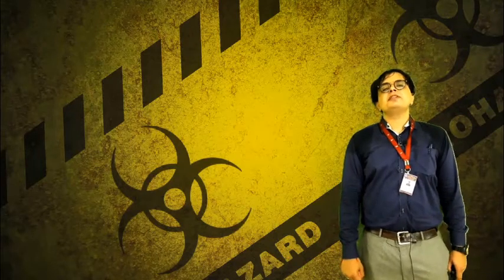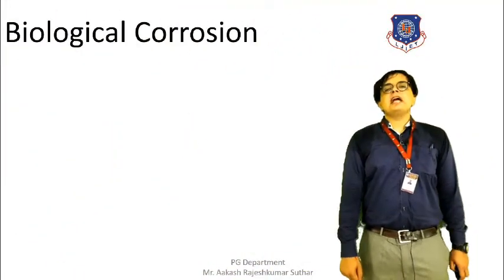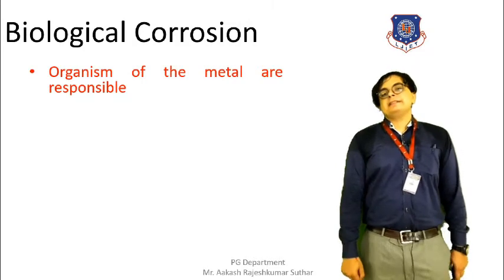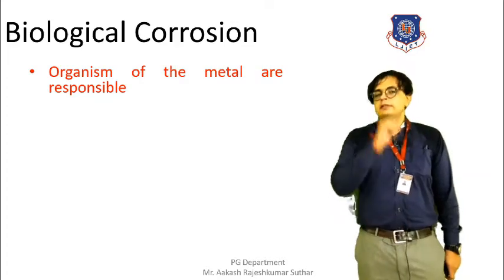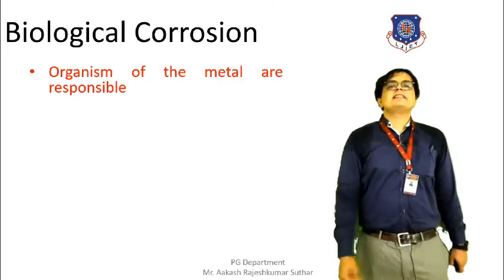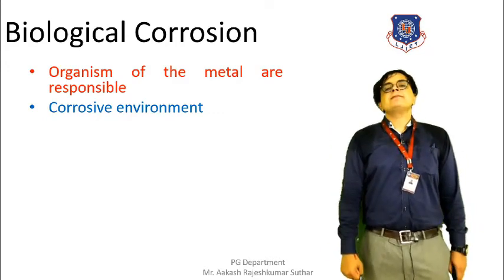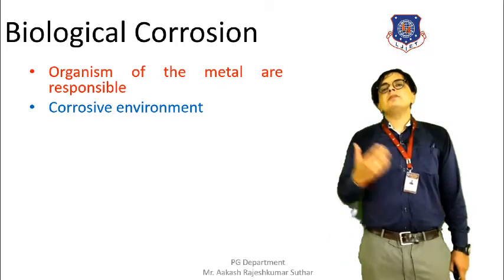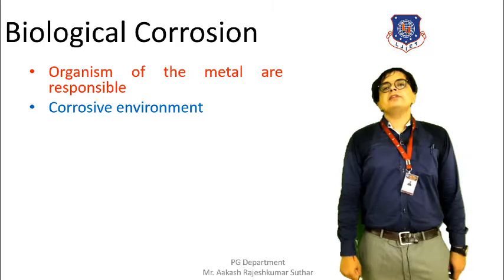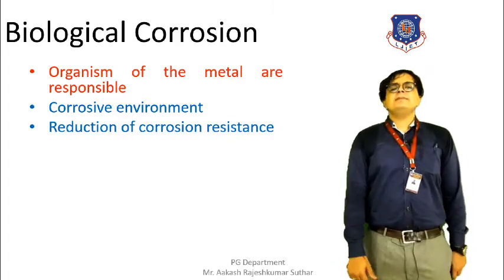When organisms are involved in the occurrence of corrosion, biological corrosion will take place. The organisms present in or around the metal cause this. They require certain conditions. First, if the metal is in a corrosive environment — where surrounding metals have also corroded — the biological organisms will accelerate and cause biological corrosion. Another condition is reduction in the corrosion resistance of the metal. If a metal's corrosion resistance has been reduced and biological organisms attack it, the chances of biological corrosion increase.